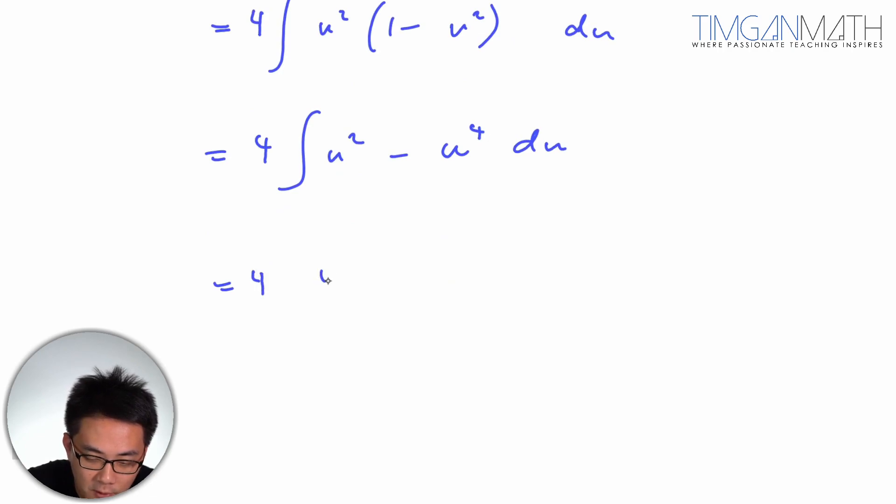this would just be 4, u cubed over 3, minus u to the 5 over 5, plus c.